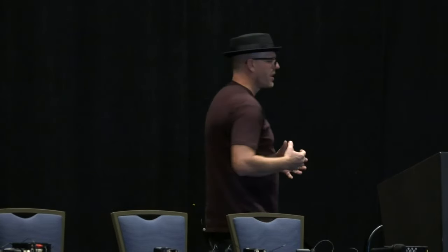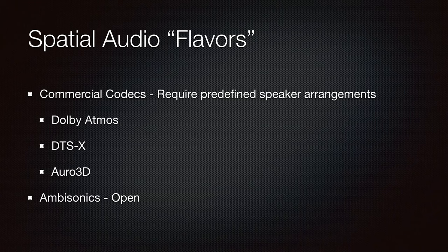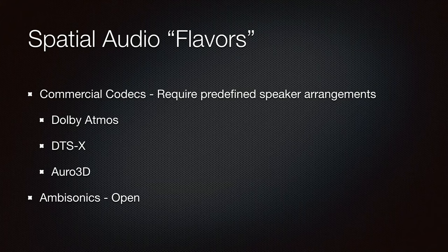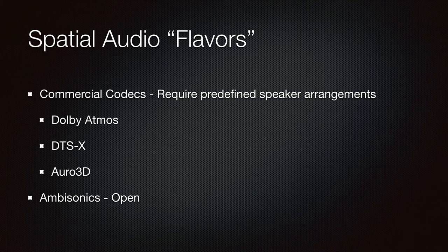Let's take a look at the spatial audio types. We can break this down into a couple of categories. We have the commercial use — things like Dolby Atmos, DTS-X, and Oro 3D. Atmos is really pushing the market in a big way. When I set up in our room, everyone asks 'is this like Dolby Atmos?' And I say yes, it's very much like Dolby Atmos. Dolby takes traditional spatial audio and adds their own algorithms and twists to it, but under the hood it's still spatial audio.